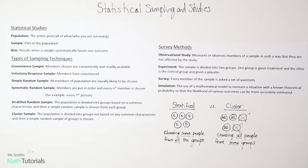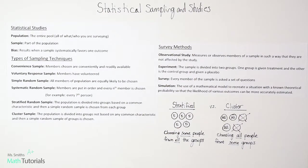Stratified random sample is when the population is divided into groups based on a common characteristic — there's something in common that places them in these groups — and then a simple random sample is chosen from each group. A cluster sample is when the population is divided into groups not based on any common characteristic, and then a simple random sample is chosen.